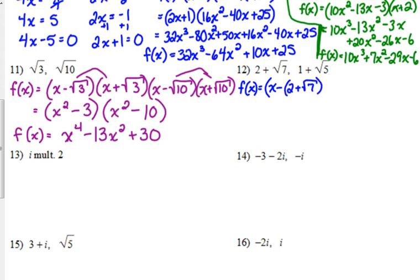So here's how we're going to set up the next one. We change the sign when we put it into linear factor form. It's already two terms, so I'm going to put a set of parentheses within a set of parentheses. Conjugate pairs means you change the sign in between — really just in front of the square root. You don't change the sign of the 2; you just change the sign in front of the square root. When we put it into linear factor form, it's always minus.